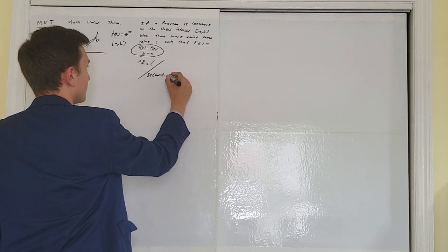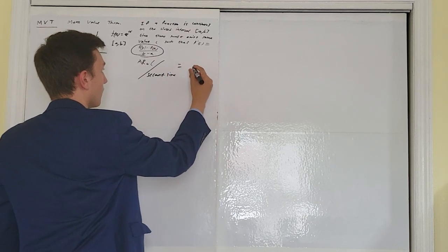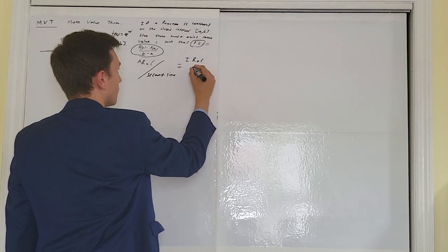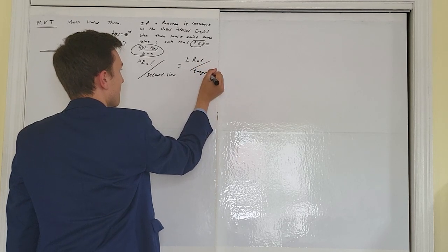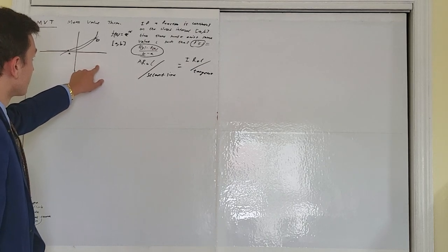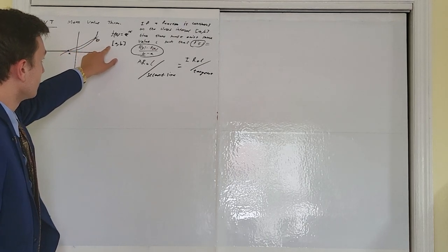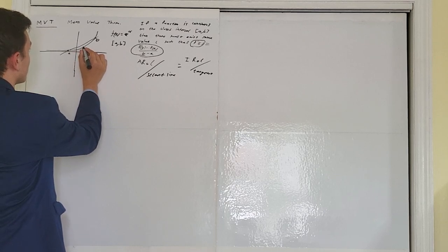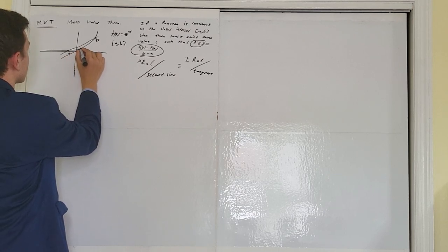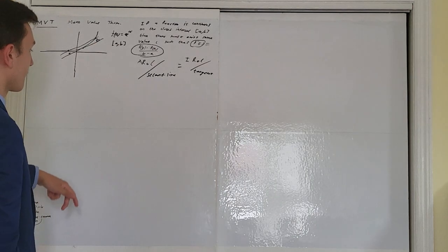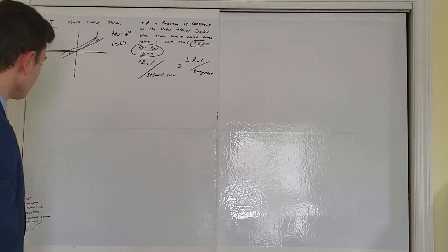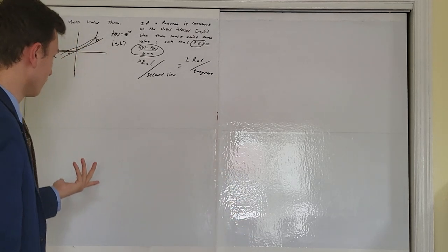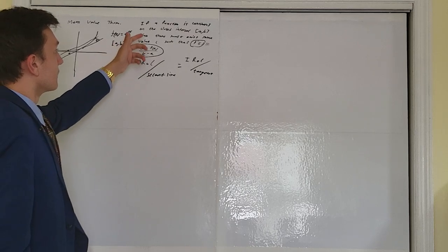There must be some point where the secant line connecting points A and B is equivalent to the tangent line at some point on the graph. If you draw a tangent line there, you'll see it's the same exact line. On an AP exam this might be part of an FRQ or multiple choice. The question would ask: must there exist some value C such that f prime equals the average rate of change?